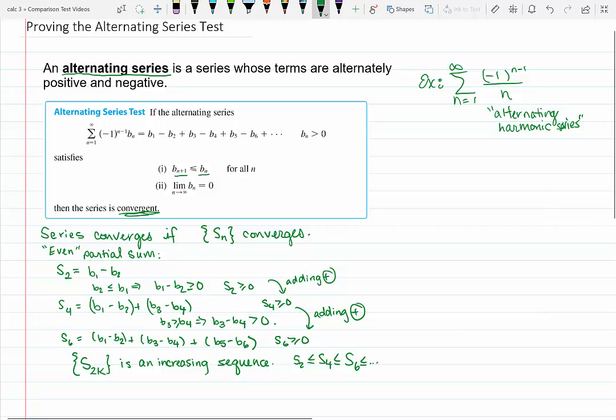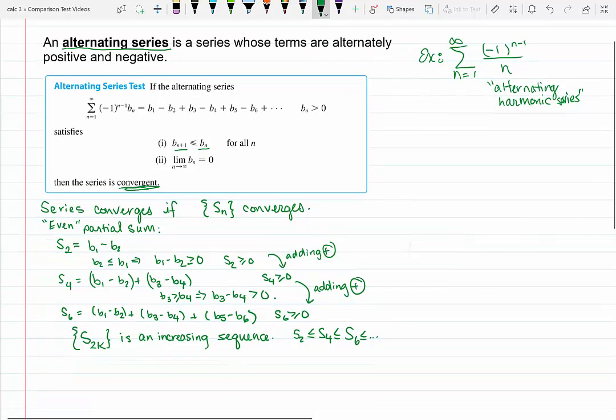Now if we've established that a sequence of partial sums happens to be not just increasing but bounded above, that was all we needed. We had that dichotomy for positive series. So the next step is to establish there's an upper bound.